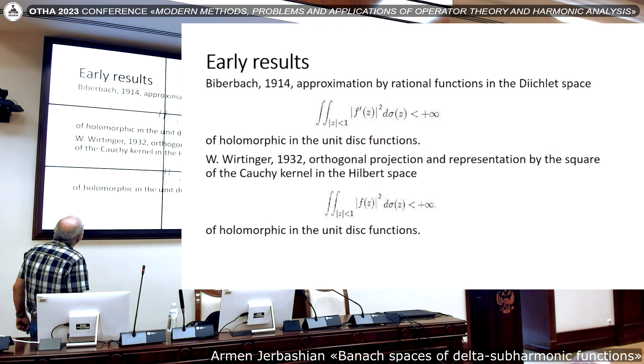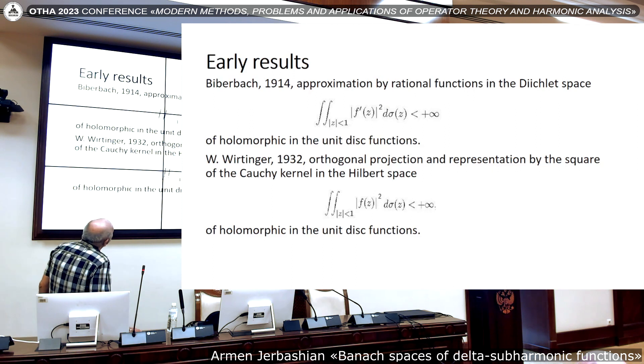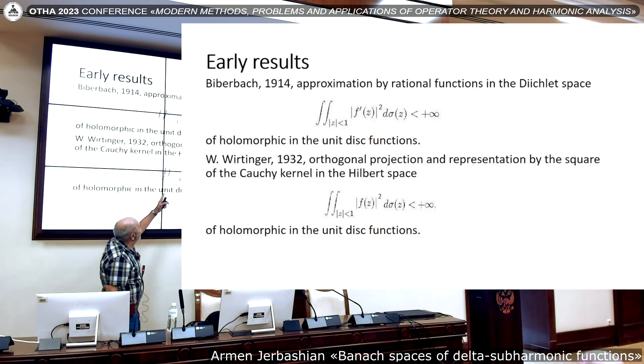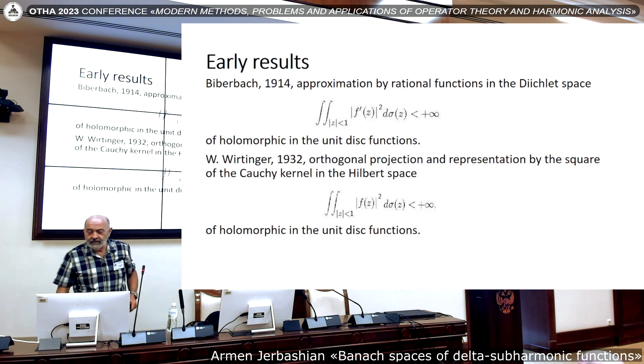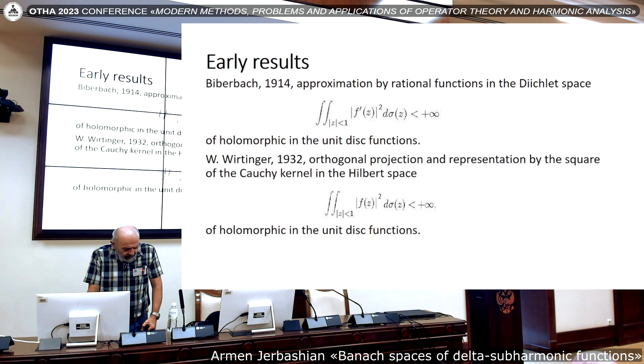Later, some other result was obtained by Wilhelm Wirtinger in 1932. That was about orthogonal projection and representation by the square of the Cauchy kernel in the Hilbert space over the disc. That is the Lebesgue measure, simple Lebesgue measure. Now I have to demonstrate two pages from the Walsh book. There is a classical book of Walsh. It had many publications in many versions.